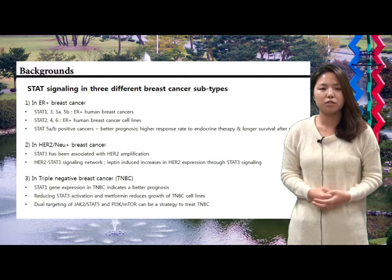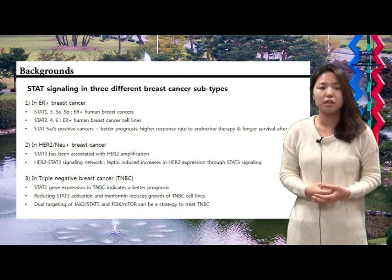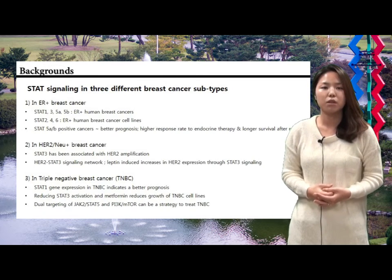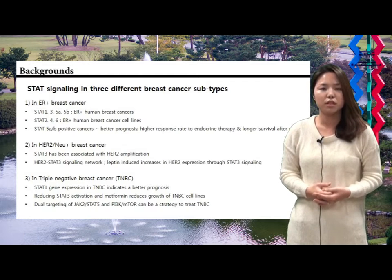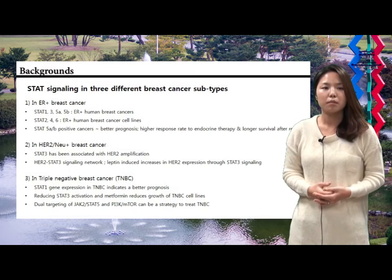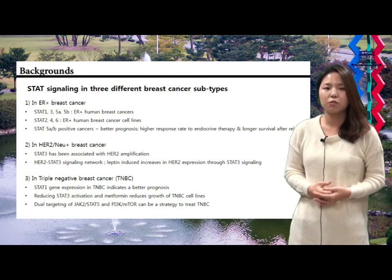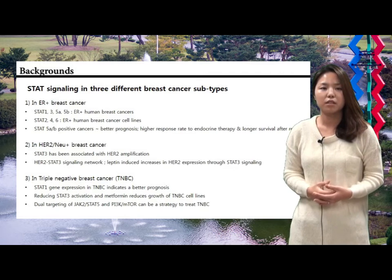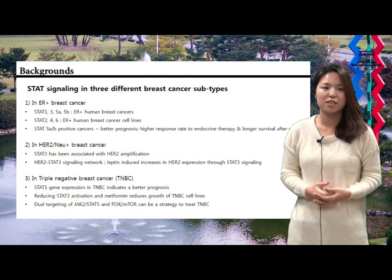This can be interpreted as STAT 3 being related to TNBC cell growth. Also, there is a paper suggesting that ZEC2, STAT 5 inhibition, and PI3 kinase mTOR dual targeting can be a good therapeutic strategy to treat TNBC. Among the STAT family, downregulation of STAT 3 and 5AB by different agents is associated with reduced growth in breast cancer cell lines, suggesting that these molecules could serve as therapeutic targets across breast cancer subtypes.